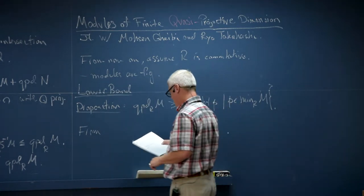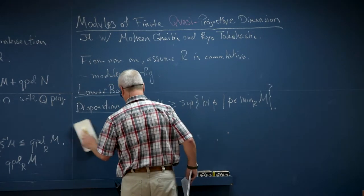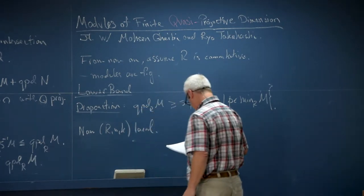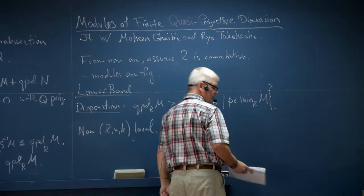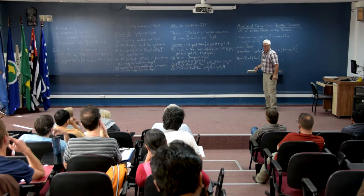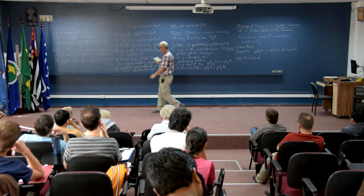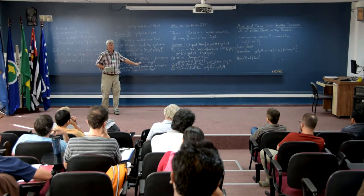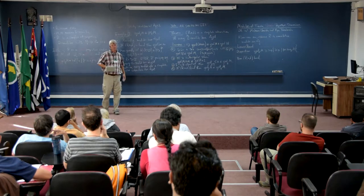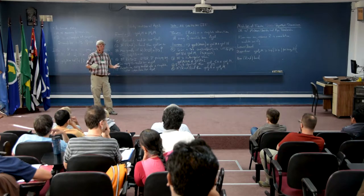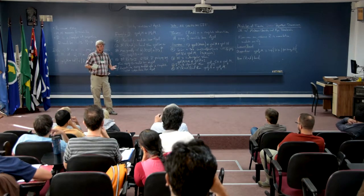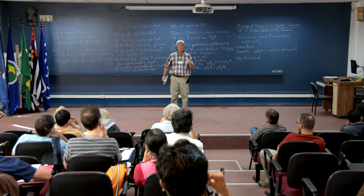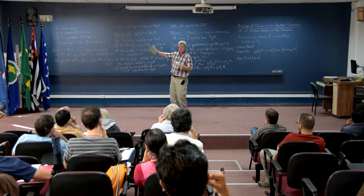Now let me specialize further to the local case. It turns out that these modules — modules of finite quasi-projective dimension — behave a lot like modules over a complete intersection. Any module over a quotient of a regular ring by a regular sequence has finite quasi-projective dimension, and the next series of results will confirm that this analogy holds quite broadly.